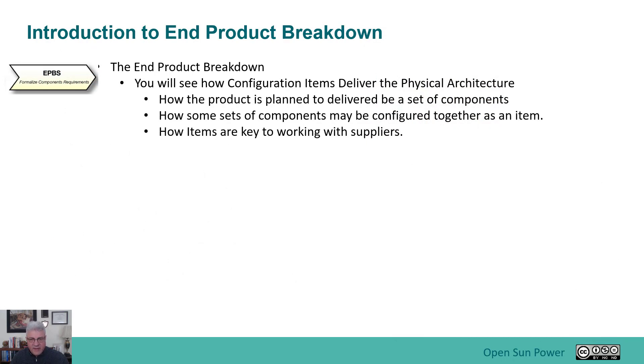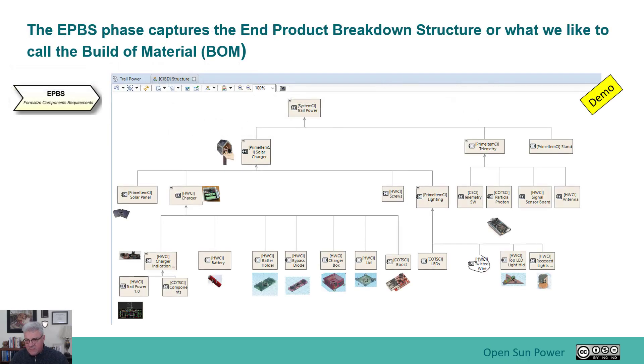You will see how the configuration items deliver this physical architecture and how the product is basically planned to be delivered by sets of components, how some of the sets may be configured together as an item, and how items are the key to working with suppliers. In this view we have this diagram, and I'll go into a demonstration of it, but typically you see it represented in a hierarchical format, so that's why we call it the End Product Breakdown Structure.